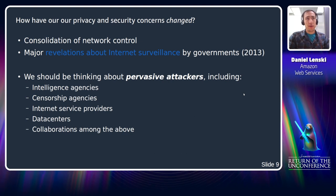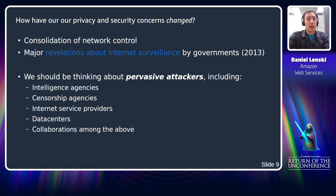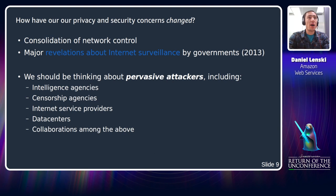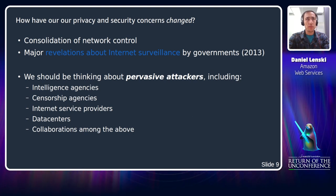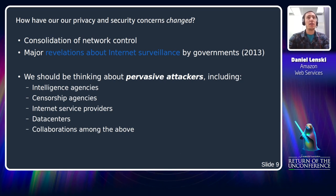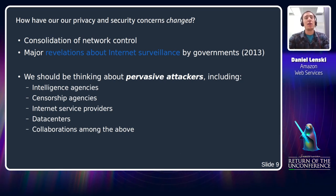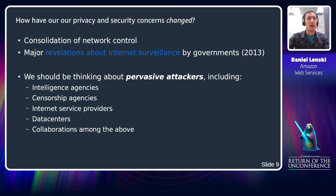One thing we've observed over the past 20 years is a consolidation of control over the networks we use. Twenty years ago, a MySQL server might have been running on a small LAN at a university or small company. Now we mostly use large wireless networks and run applications inside data centers outside our direct control. We've also had revelations about government internet surveillance starting with Snowden's disclosures in 2013. As a result, we need to think about pervasive attackers — including intelligence or censorship agencies, internet service providers, data centers, and collaborations among those groups.